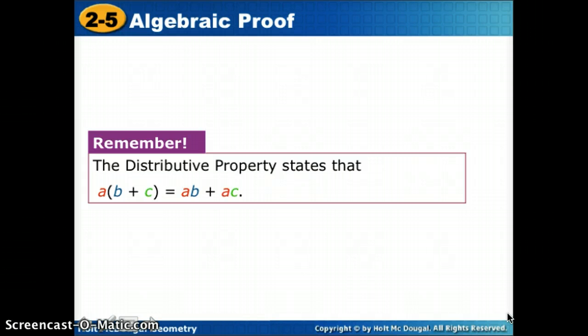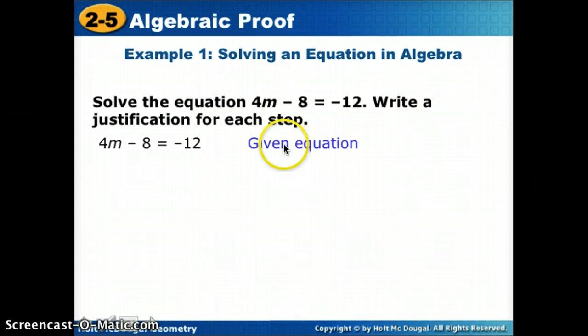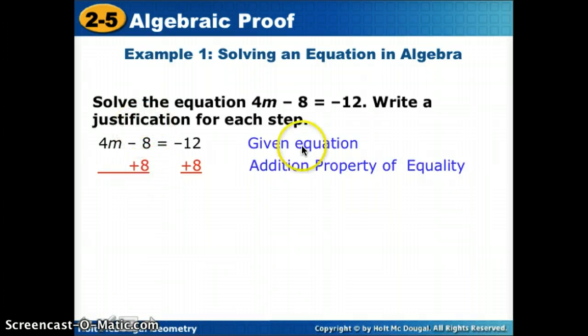So now we're going to do our first algebraic proof. We're going to use an equation and we're going to solve and then we're going to justify each step that we did. So if I have the equation 4M minus 8 equals negative 12, that's the equation I'm going to start with and you always start with what you're given. So how did I know this? It was given to me. That's its justification. So if I was thinking how am I going to solve, what would I do to this side of the equation, well I do whatever is added or subtracted, so I want this negative 8 to go away. So I'm going to add 8 to both sides using the addition property. So next I'm going to simplify, so the negative 8 plus 8 goes away and I get 4M, negative 12 plus 8 gives us negative 4 and what we did there was simplified.